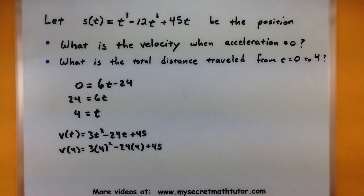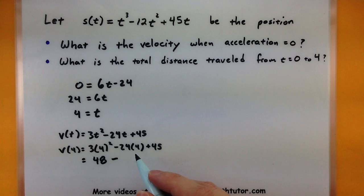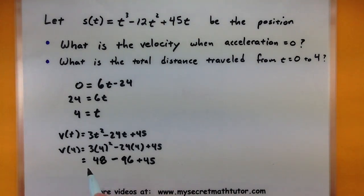So 3 times 4² minus 24 times 4 plus 45. Alright, so a little bit of simplifying to do with this one. I have 3 times 16 right here, that's 48. Minus 24 times 4 is 96, and plus 45. So combining all of these numbers together, I get a negative 3.